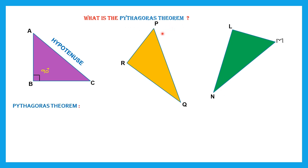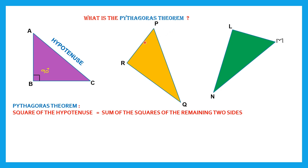So what is this Pythagoras Theorem? According to this, the square of the hypotenuse — that means if you multiply the side two times, that is called square — will be equal to the sum of the squares of the remaining two sides. So the square of the hypotenuse will be equal to the square of one side plus the square of the other side.